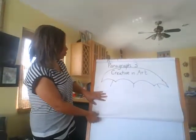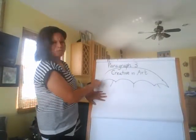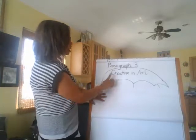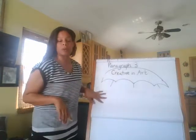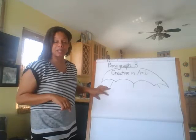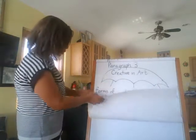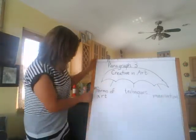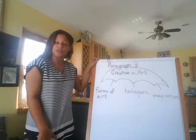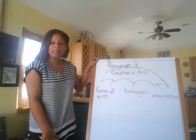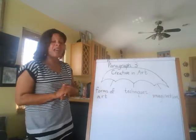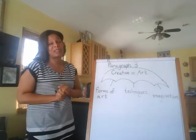So for paragraph three, I drew a little umbrella to help get the visual — being creative in art. There are different forms of art, which means you can do painting, you can do sculpting, you can use clay. These are all different forms of art and you can be very creative with all of them.